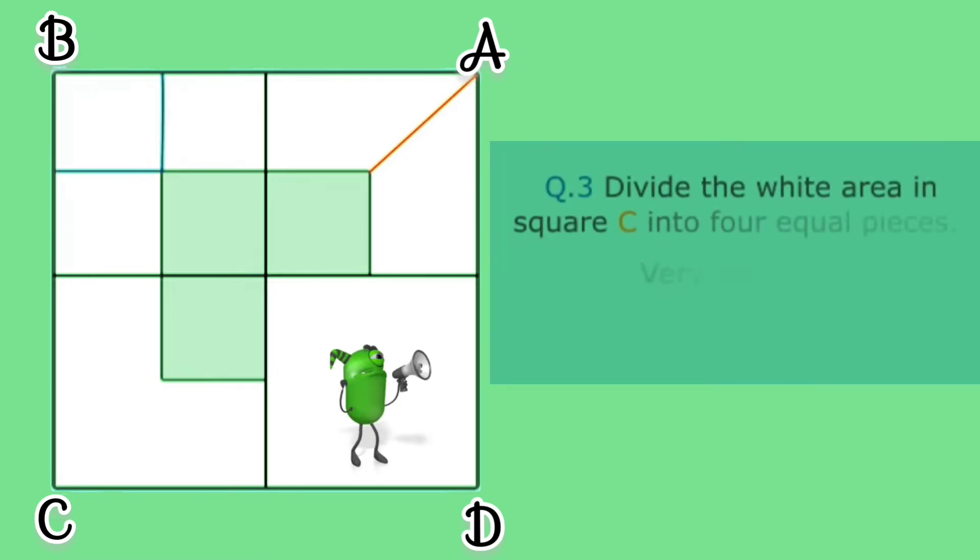Question number three: divide the white area in square C into four equal pieces. Very difficult. Here is the answer.